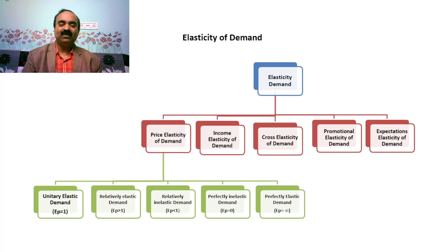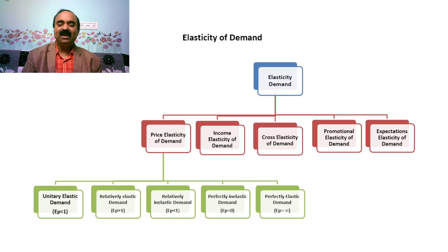Dear students, price elasticity of demand is again divided into 5 categories: 1. Unitary elastic demand. 2. Relatively elastic demand. 3. Relatively inelastic demand. 4. Perfectly inelastic demand. 5. Perfectly elastic demand. About different types of price elasticity of demand, I will be explaining in the next slide with the help of diagrams.